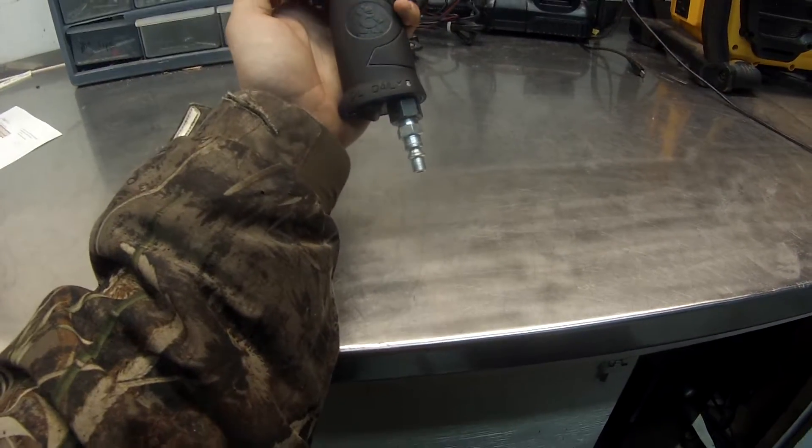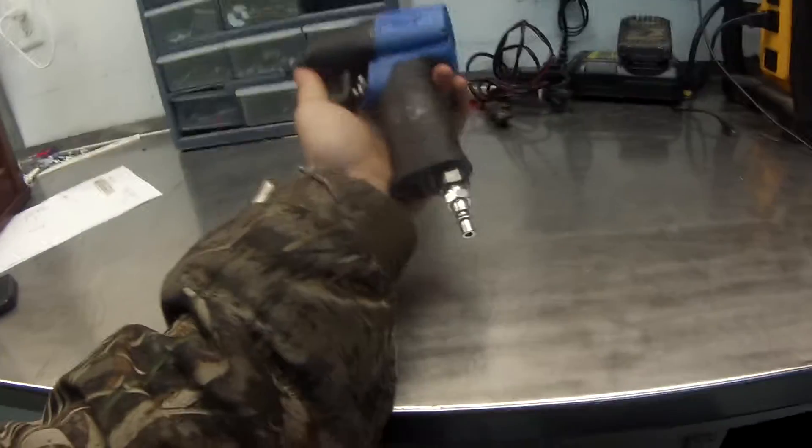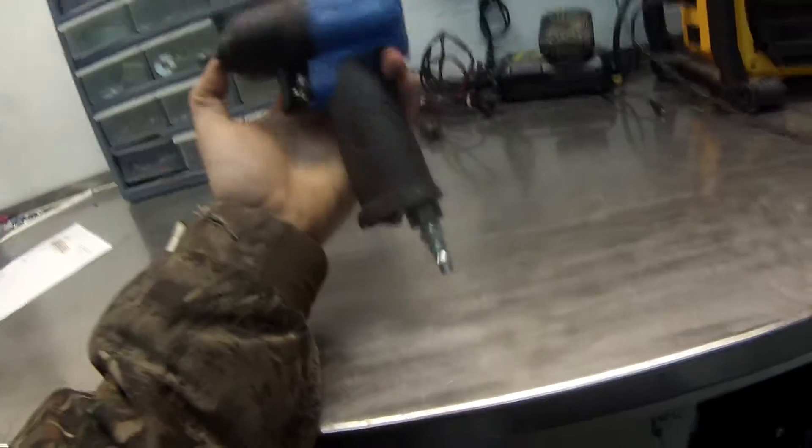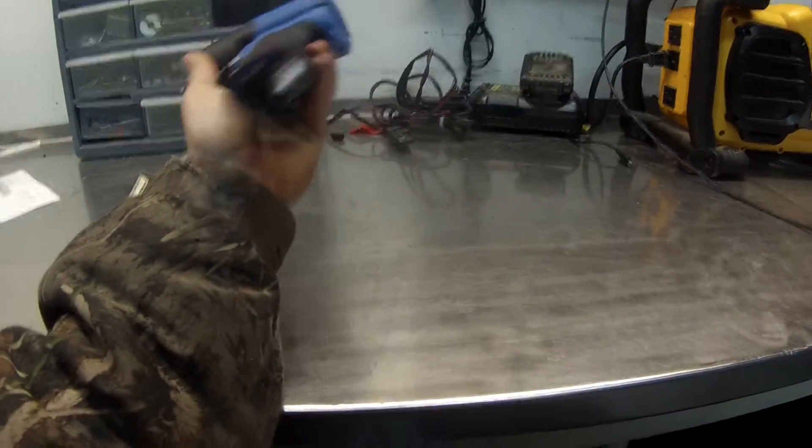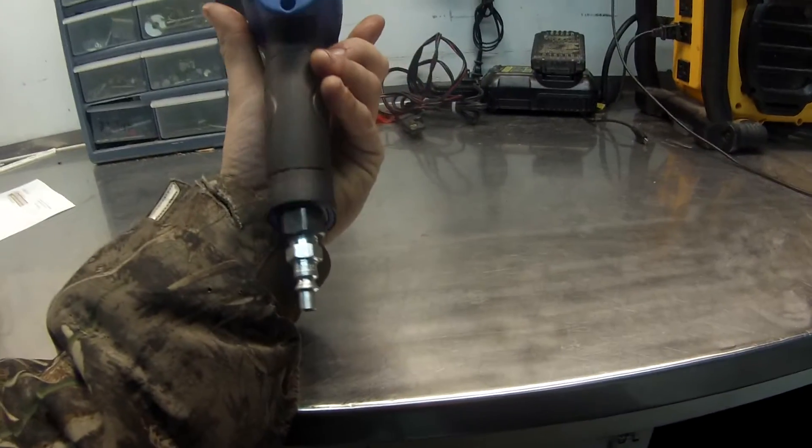This might be a little bit cheaper feeling, but for the money, I would recommend getting the Cornwell 3/8 air impact over the Snap-on, just for the money. If you got the money and you're Snap-on true die hard, then get the Snap-on.